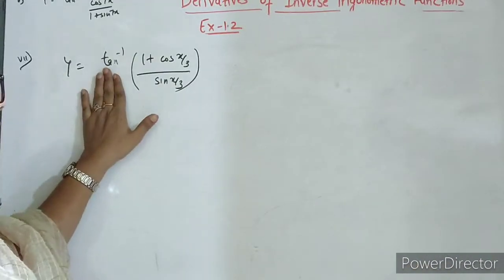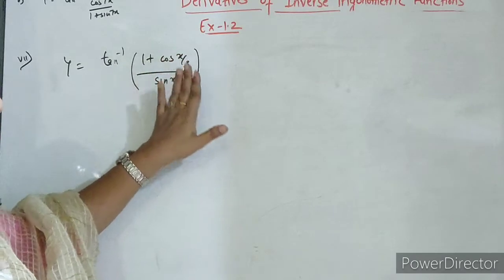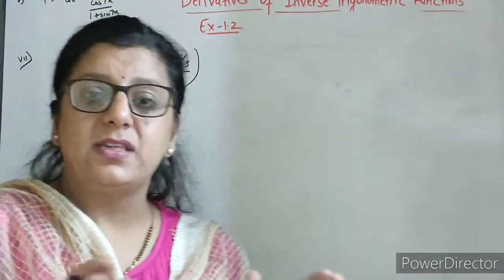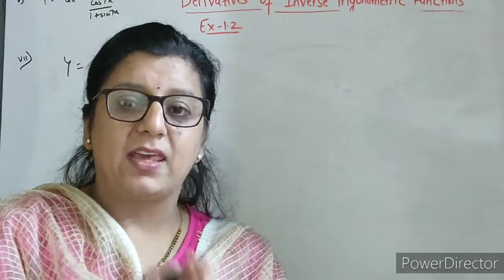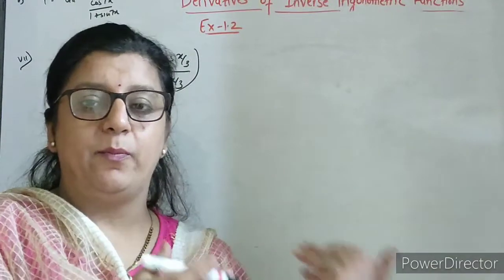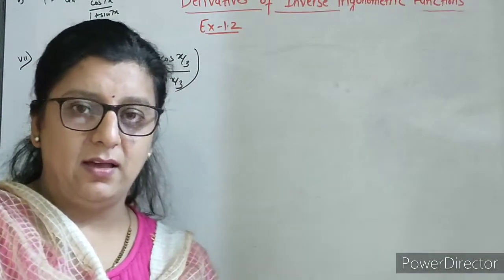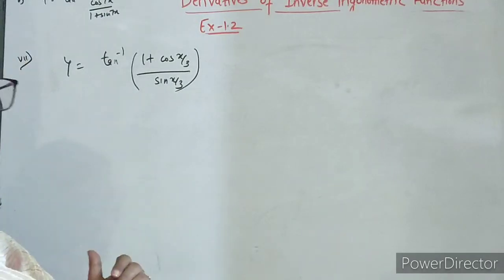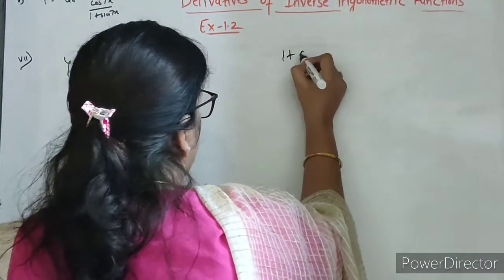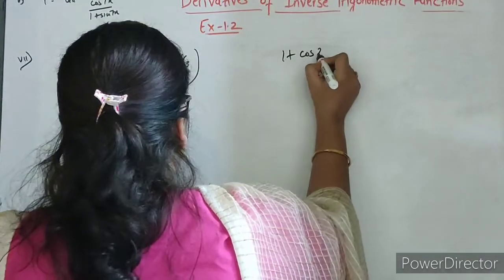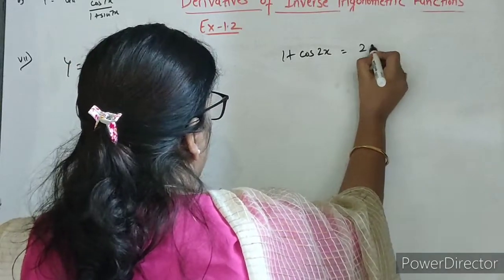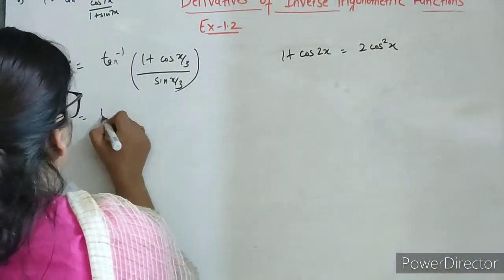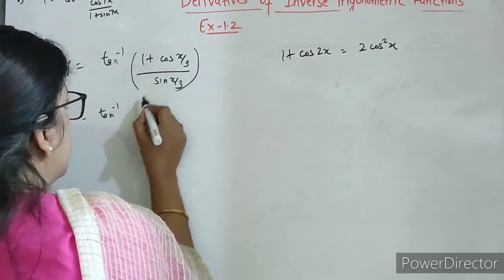7th part: y equals to tan inverse of 1 plus cos x by 3 upon sin x by 3. Students, sab kuch yaha par formula ka formulae put karo aur solution nikalo. So start karte hain. 1 plus cos 2x ka formulae hota hai 2 cos square x. Toh mujhe batao, yaha par kya formulae rakhna chahiye? Joh bhi yaha par angle hai — 2x hai, toh yaha par uska half aata hai.